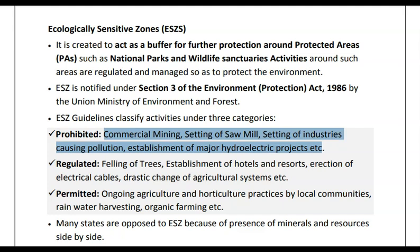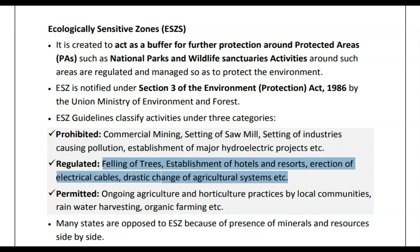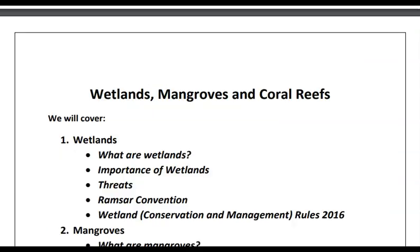The second category is regulated activities, which include establishment of hotels and resorts, electrical cables, and drastic changes in agriculture systems. The third category is permitted activities such as agriculture and horticulture practices by local communities and organic farming. However, many states are opposed to ecologically sensitive zones because of the presence of minerals and other resources.